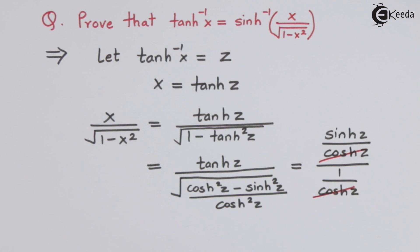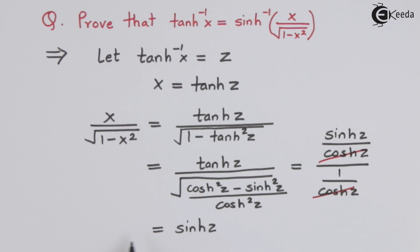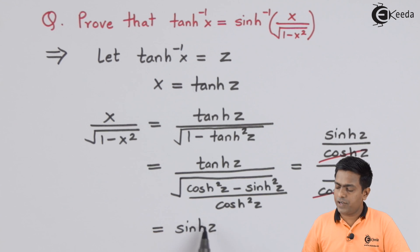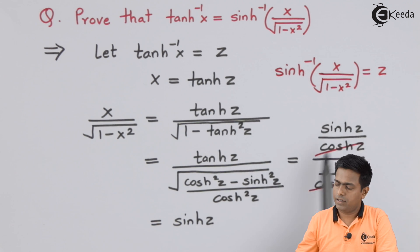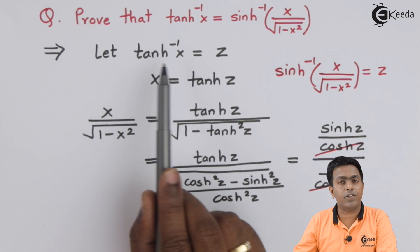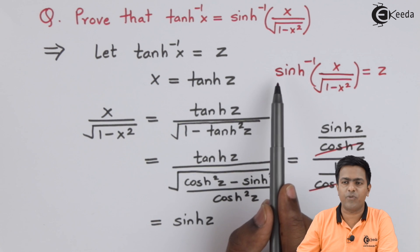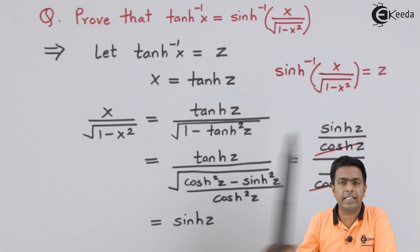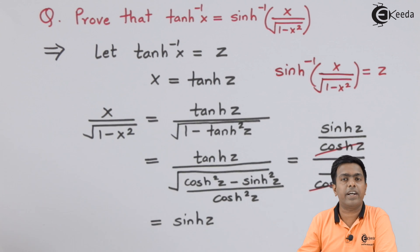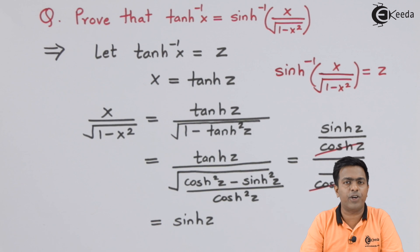So the right hand side simplifies to sinh(z), which means sinh(z) = x / √(1 - x²). Shifting sinh to the other side gives sinh⁻¹(x / √(1 - x²)) = z. We started with tanh⁻¹(x) = z, and now we have sinh⁻¹(x / √(1 - x²)) = z. Since both left hand sides equal the same z, the required result is proved. Keep watching — in the next video I'll cover problem number two on inverse hyperbolic functions.